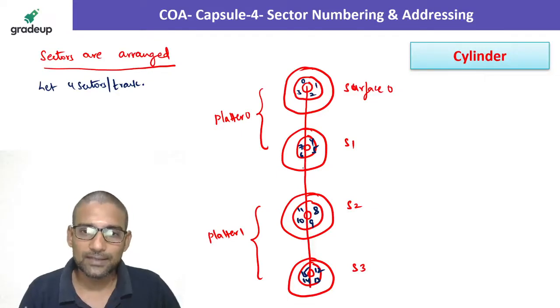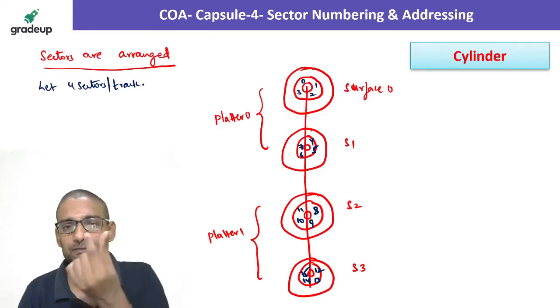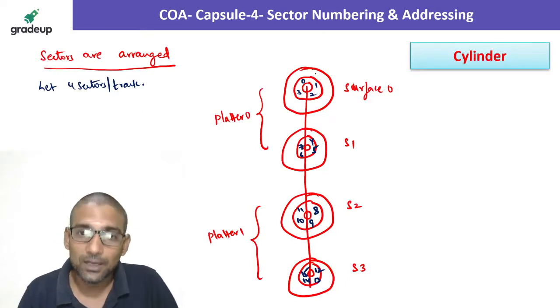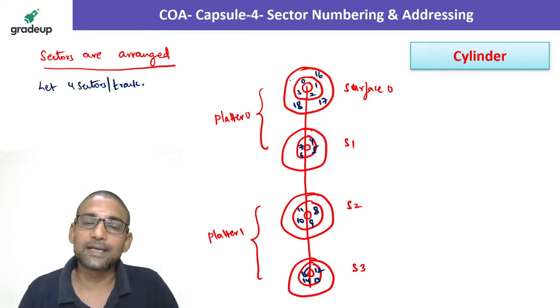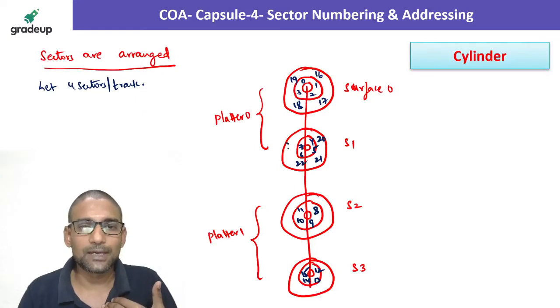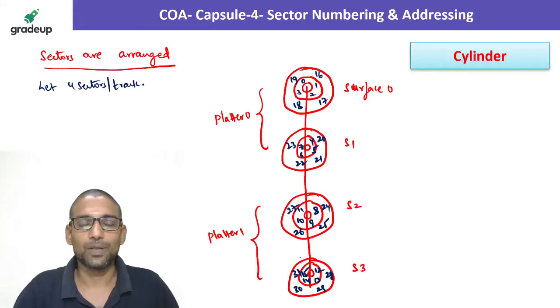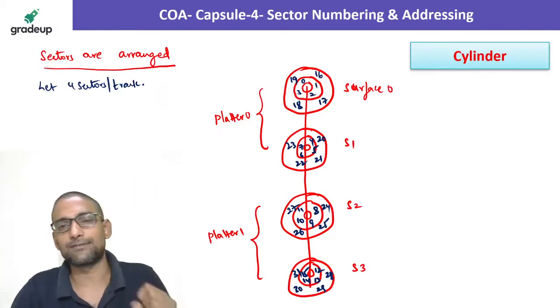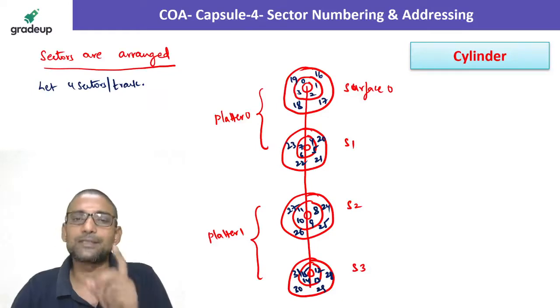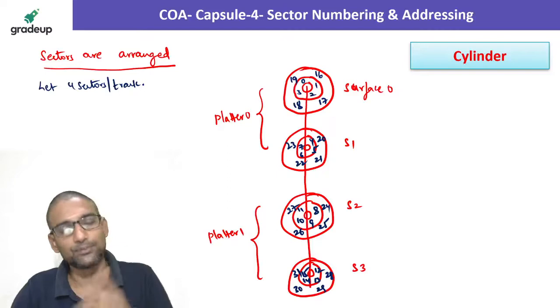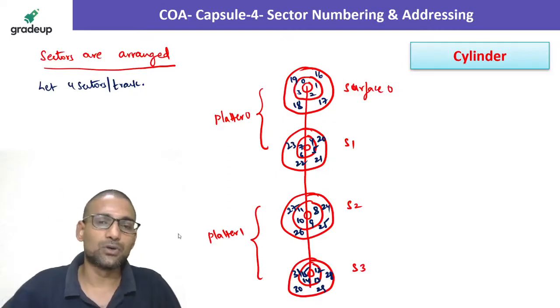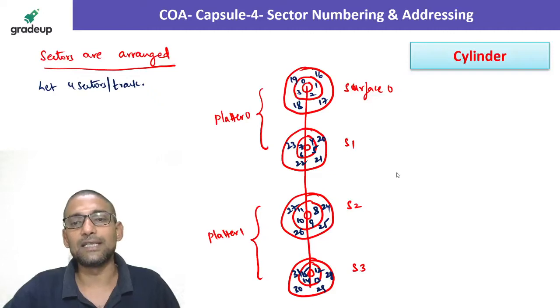How many surfaces there are, all the surfaces, that particular track, once it fills, then only the next track filling will start. As we assumed, there are four surfaces, four surfaces first track got filled now. The next sector will fill in the second track of first surface. After this, second track of next surface and so on. Like this, the sectors are arranged. This arrangement is what we say, cylinder alignment.